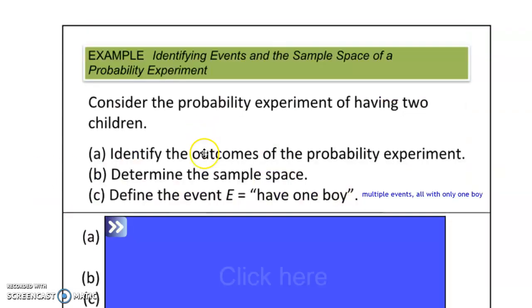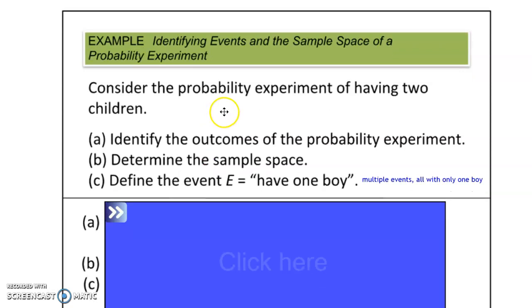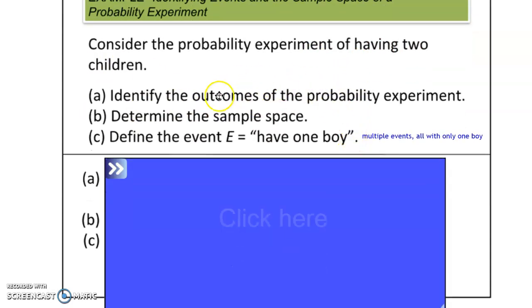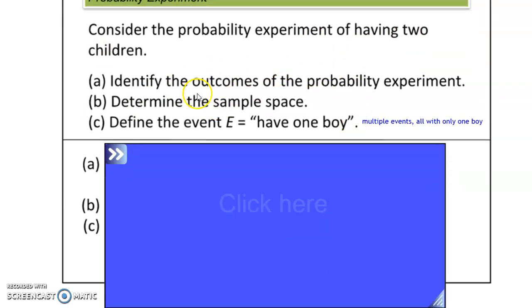Considering a probability experiment of having two children — not really a probability experiment for many, more like an actual family. Identifying the outcomes of the probability experiment is fairly straightforward, but determining the sample space is a little bit more difficult. Defining the event E — having exactly one boy — is even more challenging. Pause the video, try this out by yourself, and see if you got it right.